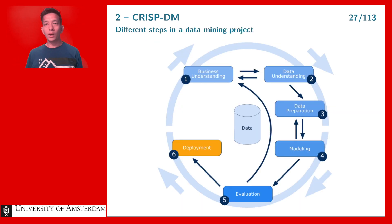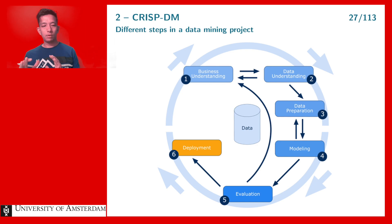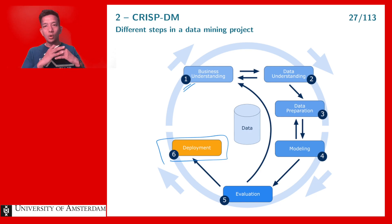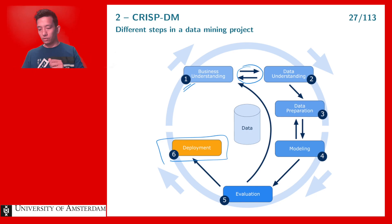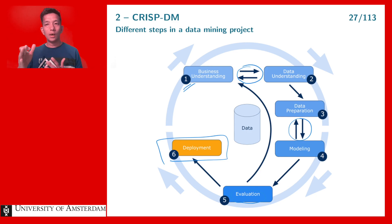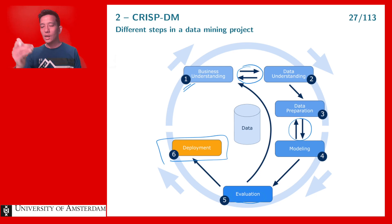Here is an overview of the CRISP-DM framework showing the different interactions between the steps. If every step is successful, you go from step one through to step six and you're done. But you also see the interactions between business understanding and data understanding, between data preparation and modeling, and from the evaluation phase all the way back to business understanding — where improved knowledge leads to new business questions and restarting the process.